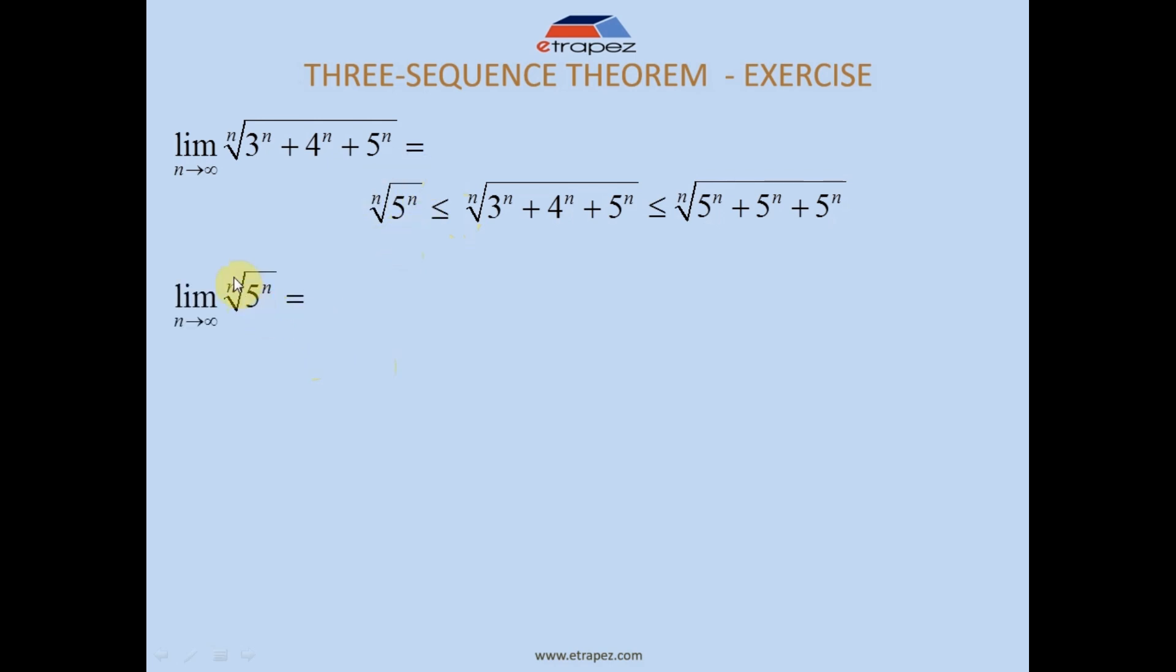The one from below, because it's easier: the nth root of 5^n. Well, the n and n cancel out here. You can understand it as the nth root being something to the power of 1/n and the n's cancel out.